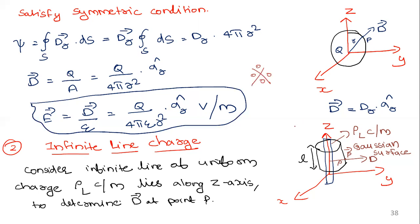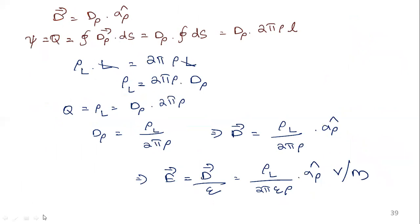Now applying Gauss's law to a line charge. Consider the x-y-z plane; there is an infinite line of uniform charge with line charge density rho-L coulombs per meter lying along the z-axis with total length L, and we place a Gaussian surface at a distance rho from it. We need to determine the electric flux density D at point P. Since it is a cylindrical surface, D = D_rho into a-hat-rho. The flux integral ∮ D · dS equals D_rho times the surface area two pi rho L.